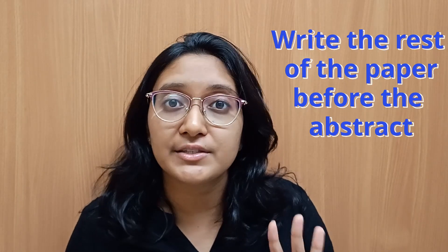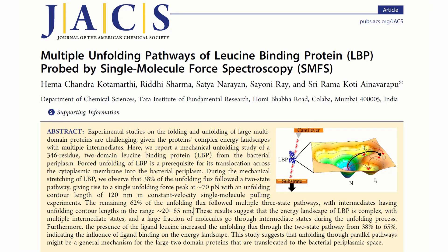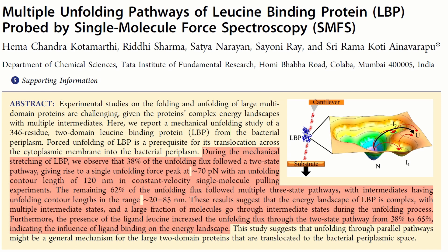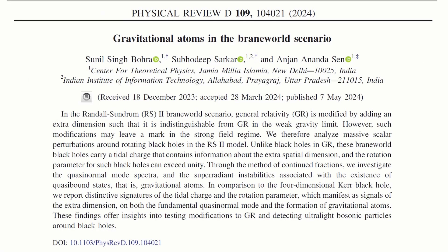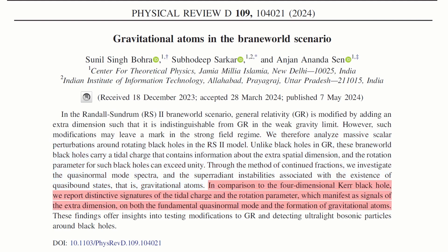An important note: you should write the rest of the paper first so that you already know the answers to these four questions, then write the abstract so that it is more coherent. Let us look at two good abstracts from two different papers and identify their parts. In the first abstract, you can see the motivation of the work, the methods the authors used, the results obtained, and the conclusion and broader perspective of the work. In the second paper's abstract, you can similarly see the motivation, the methods, the results, and the conclusions and future implications of the work. Thank you so much for watching this episode till the end.